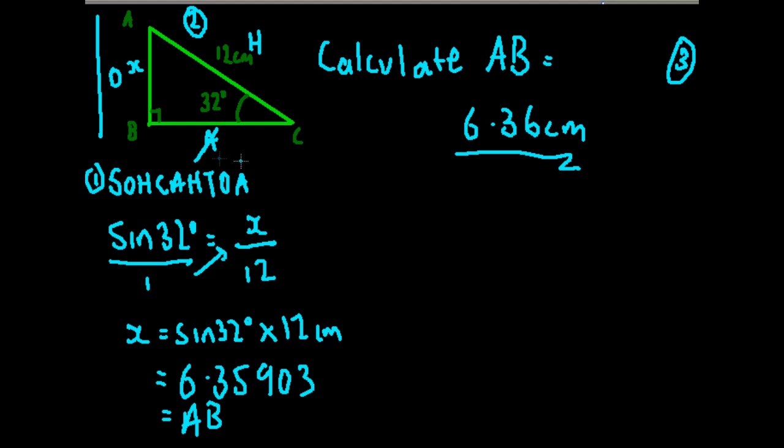Let's just go over that. First we wrote the formula SOH CAH TOA to help us. Then the second step was to label the sides. Third step was to fill it in. Fourth step was to rearrange the formula. And the last step was to put it into the calculator and work it out.